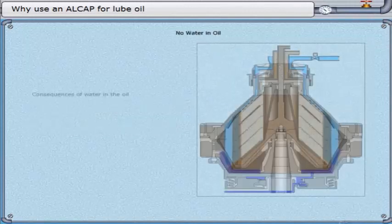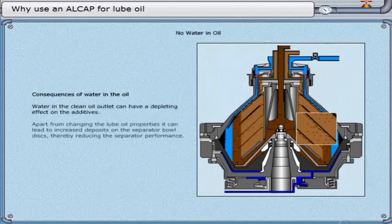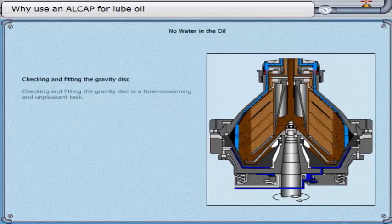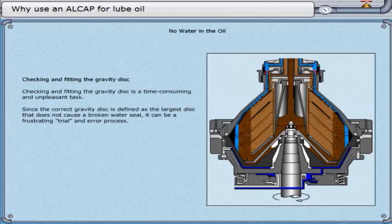Water in the clean oil outlet can have a depleting effect on the additives. Apart from changing the lube oil properties, it can lead to increased deposits on the separator bowl disks, thereby reducing separator performance. Checking and fitting the gravity disk is a time-consuming and unpleasant task. Since the correct gravity disk is defined as the largest disk that does not cause a broken water seal, it can be a frustrating trial-and-error process, and alarms for broken water seals can be frequent.